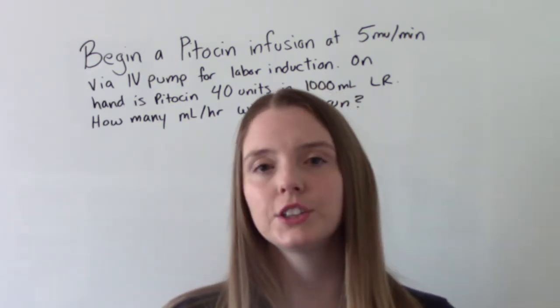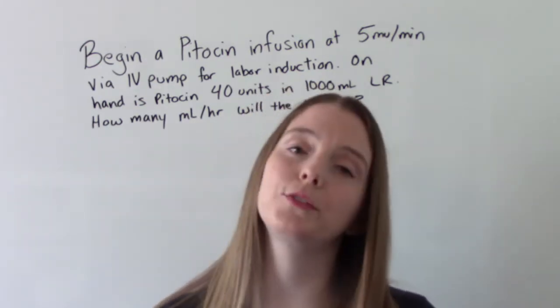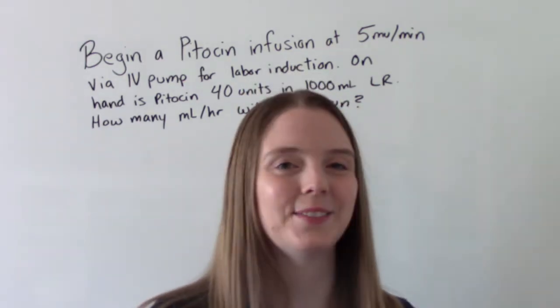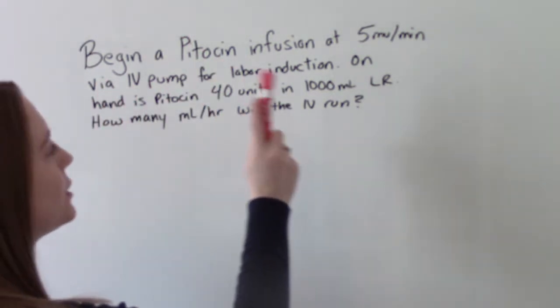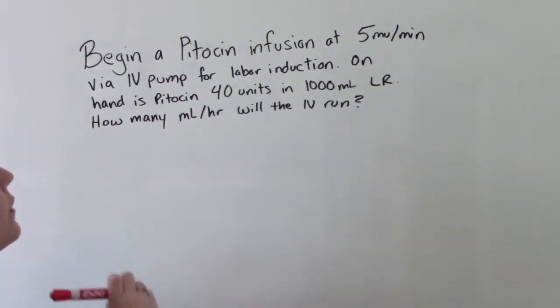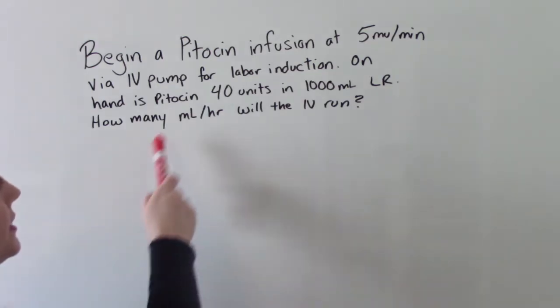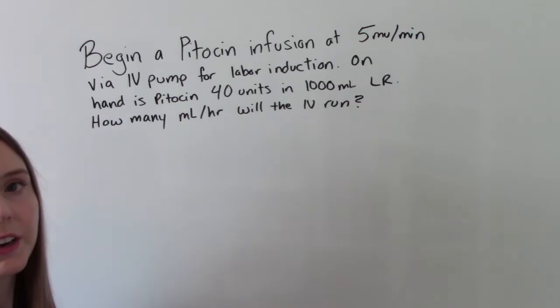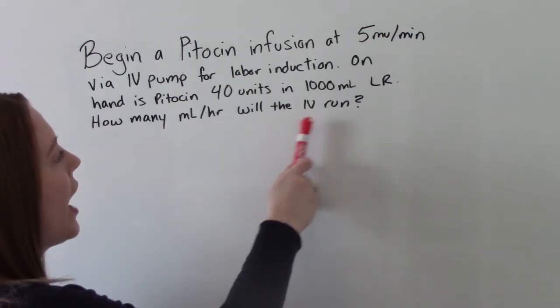These are medication calculation questions that will occur specifically in your maternal child course or if you go on to be a labor and delivery nurse. So let's get into them. First off we have Pitocin. We want to begin our Pitocin infusion at five milli units per minute via an IV pump for labor induction. On hand is Pitocin 40 units in 1,000 mLs of lactated ringers. So how many mLs per hour will the IV run?